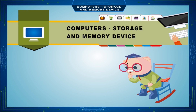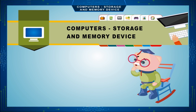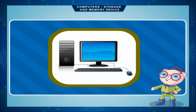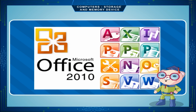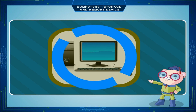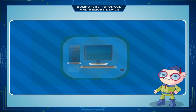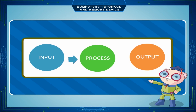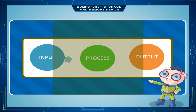Computers: Storage and Memory Devices. A computer is an electronic device that processes raw data with the help of a program and produces meaningful information. These functions are performed in a cycle called the Input-Process-Output cycle, or IPO cycle.